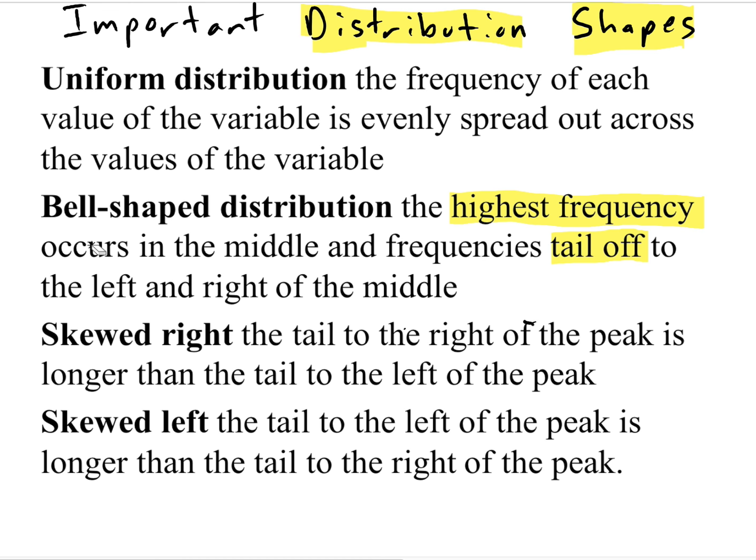The uniform distribution and the bell-shaped distribution are both examples of what we would call symmetric distributions. They are even. They have symmetry. And there are two types of not-symmetric distributions called a skewed-right distribution and a skewed-left distribution.